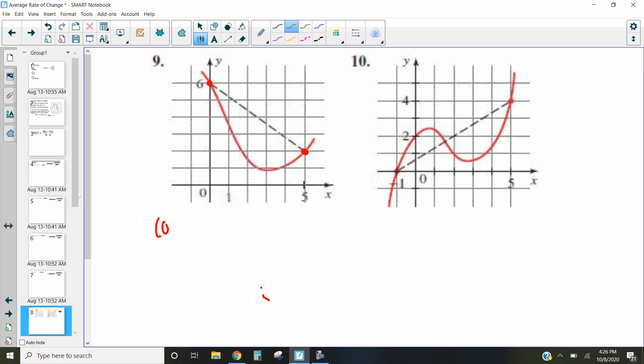We have the point (0,6) and the point (5,2). Now there's kind of two things we can do. We can either use our average rate of change equation to calculate that distance, or we can just count.